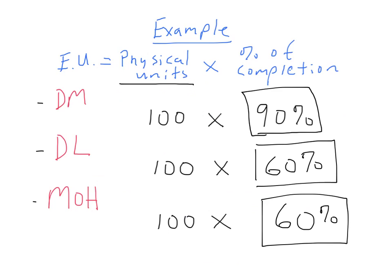So running the calculation, we are going to take the percentage of completion for each of these areas times the physical units, 100, and that is going to give us the equivalent unit calculation. So 100 times 90 percent means that we have 90 equivalent units in this example for direct materials.